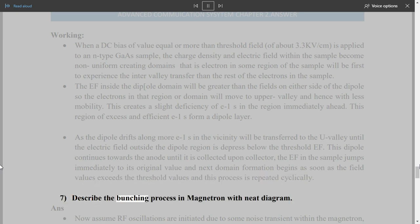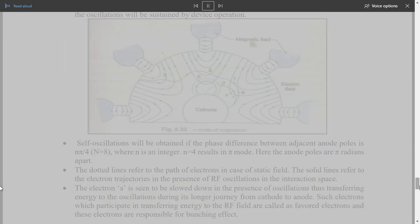As the dipole drifts along more electrons in the vicinity will be transferred to the upper valley until the electric field outside the dipole region is depressed below the threshold EF. This dipole continues towards the anode until it is collected upon collector. The EF in the sample jumps immediately to its original value and next domain formation begins as soon as the field values exceeds the threshold values and this process is repeated cyclically. 7. Describe the bunching process in magnetron with neat diagram. Now assume RF oscillations are initiated due to some noise transient within the magnetron. The oscillations will be sustained by device operation. Self oscillations will be obtained if the phase difference between adjacent anode poles is n pi slash 4, n equals 8, where n is an integer. N equals 4 results in pi mode. Here the anode poles are pi radians apart. The dotted lines refer to the path of electrons in case of static field.